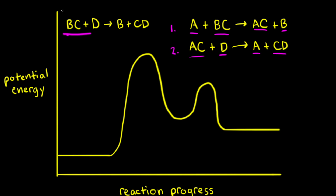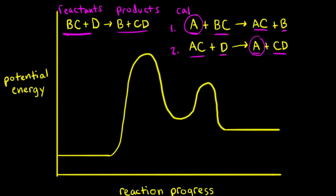We've seen that BC and D are our reactants, and B and CD are the products for this hypothetical reaction. Looking at the mechanism, A is present at the beginning and at the end, but A is not a reactant or a product. Therefore, A must be a catalyst.